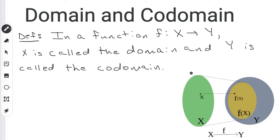So labeling all this, the x is going to be the domain. This is the set of all x values. And y is going to be the codomain.